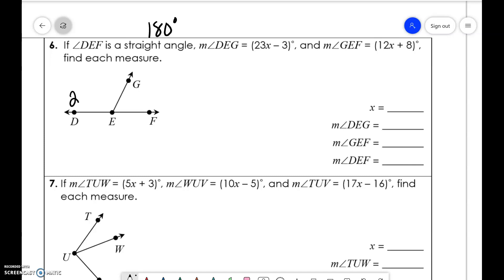So DEG is 23x minus 3 and GEF is 12x plus 8. So 23x minus 3 plus 12x plus 8 is equal 180. And then you're just plugging it in.